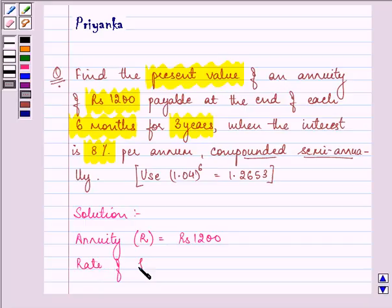The rate of interest, that is r, is given to us as 8% per annum which needs to be converted semi-annually, so it will be 4% semi-annually, that is half of 8%.